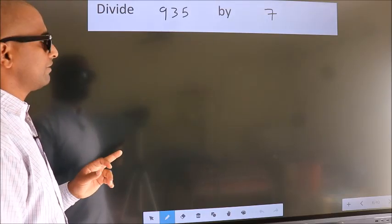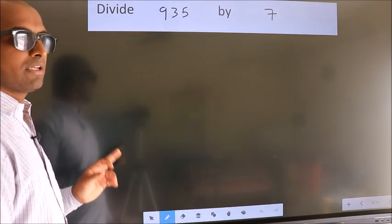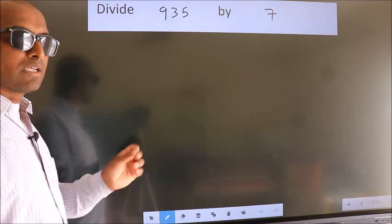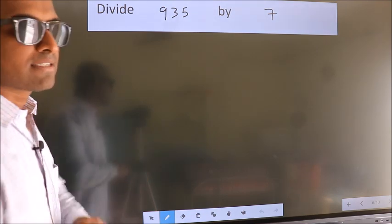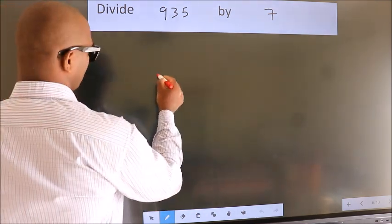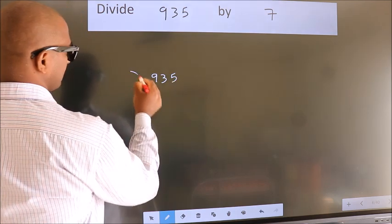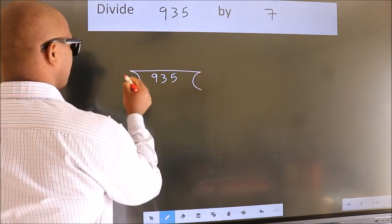Divide 935 by 7. To do this division, we should frame it in this way. 935 here, 7 here.